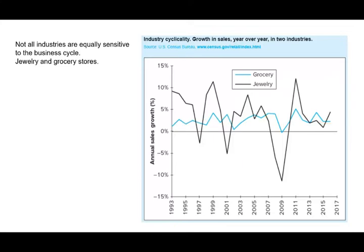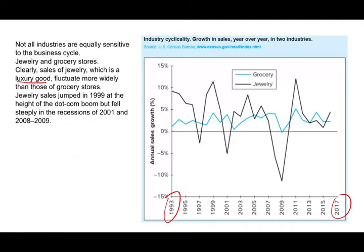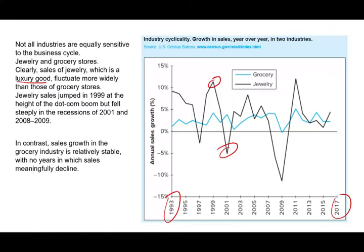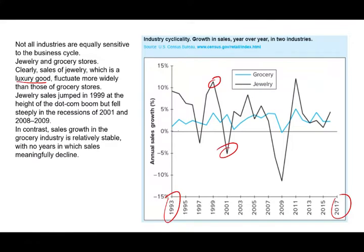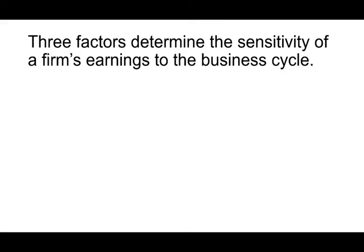Looking at data from 1993 to 2007, grocery sales stayed almost the same on average, while jewelry store sales clearly go up and down with the economy. Sales of jewelry, a luxury item, fluctuate more widely than those of grocery stores. Jewelry sales jumped in 1999 during the dot-com boom but fell in 2001 during the recession. In contrast, sales growth in the grocery industry is relatively stable — people still eat at home during a recession and may even buy more groceries. This reflects that jewelry is a discretionary item whereas most grocery products are staples.